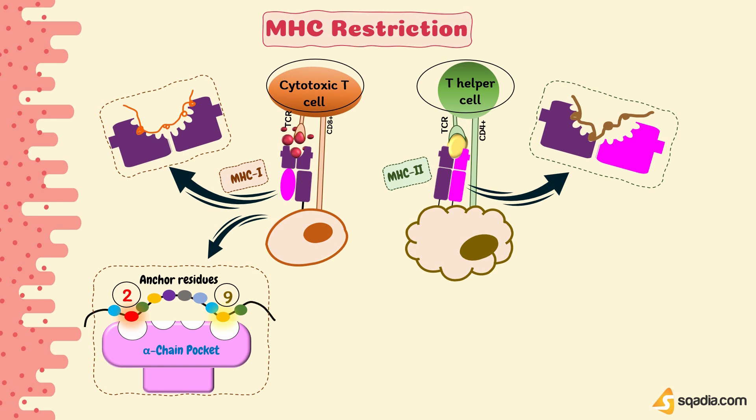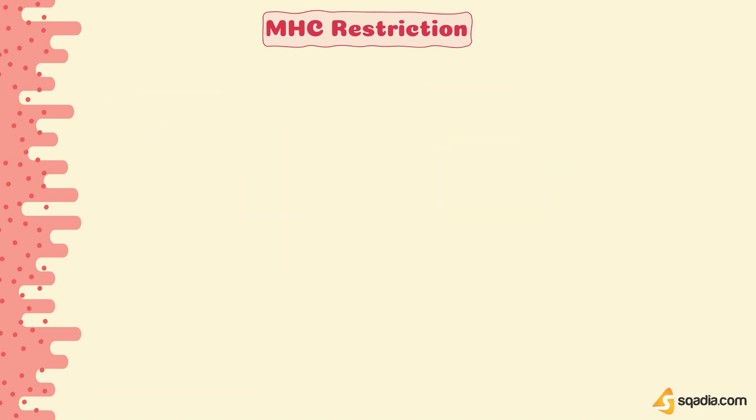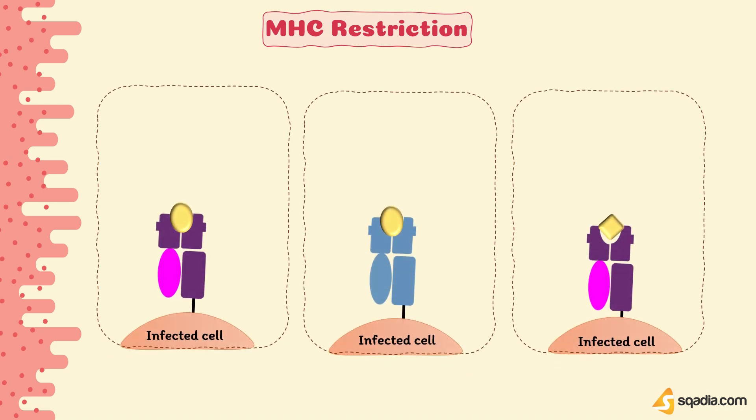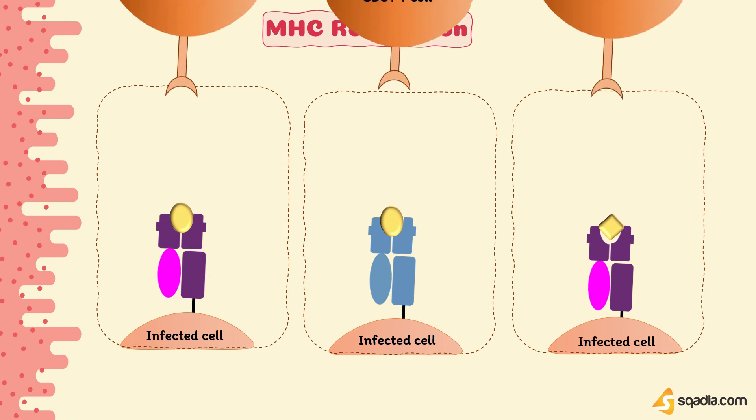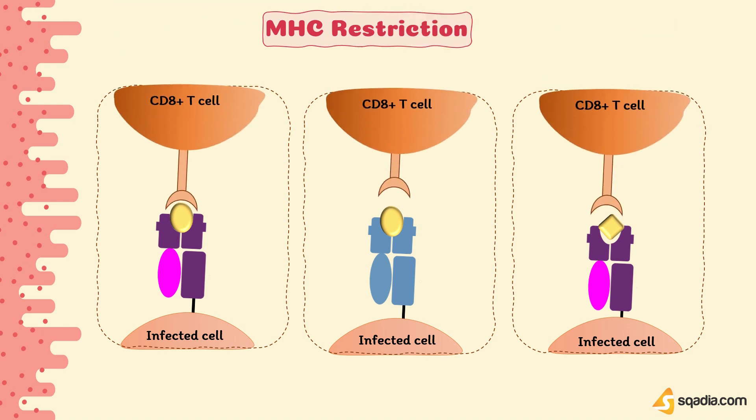Control of immune responsiveness is therefore also one of the genetic traits associated with the MHC, because of the role that MHC molecules play in binding antigens and presenting them to TCRs prior to initiation of an immune response. This explains how antigen binds to the binding groove of MHC molecules. Once this MHC-antigen complex is formed, it is presented to T cells.